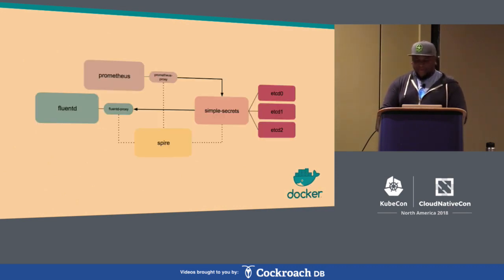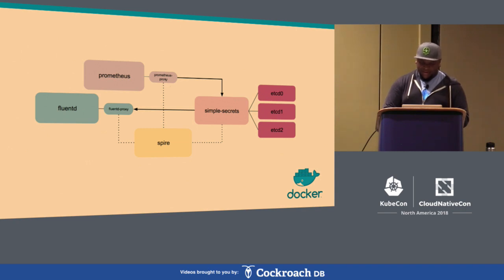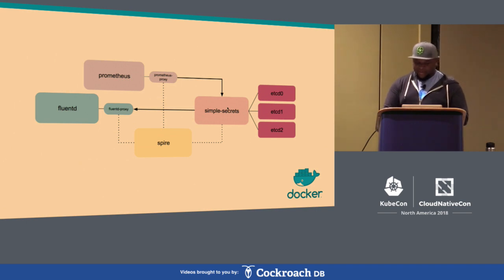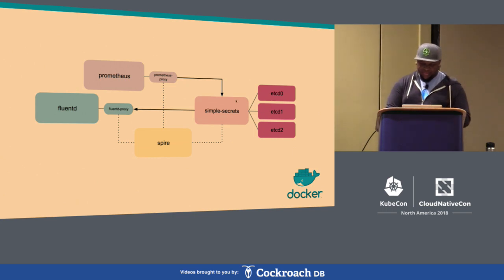Here's a high-level overview of what the demo architecture looks like. We have three instances of an etcd database and our simple secret server — no load balancing. The important thing is we're using Envoy in a sidecar pattern to create TLS connections between Prometheus and simple secrets, and between FluentD and simple secrets. Simple secrets pushes information to FluentD, and Prometheus pulls information from the secrets server. If you were using OpenTracing or OpenConsensus, they also have push and pull models. Prometheus also now has a push aggregator.